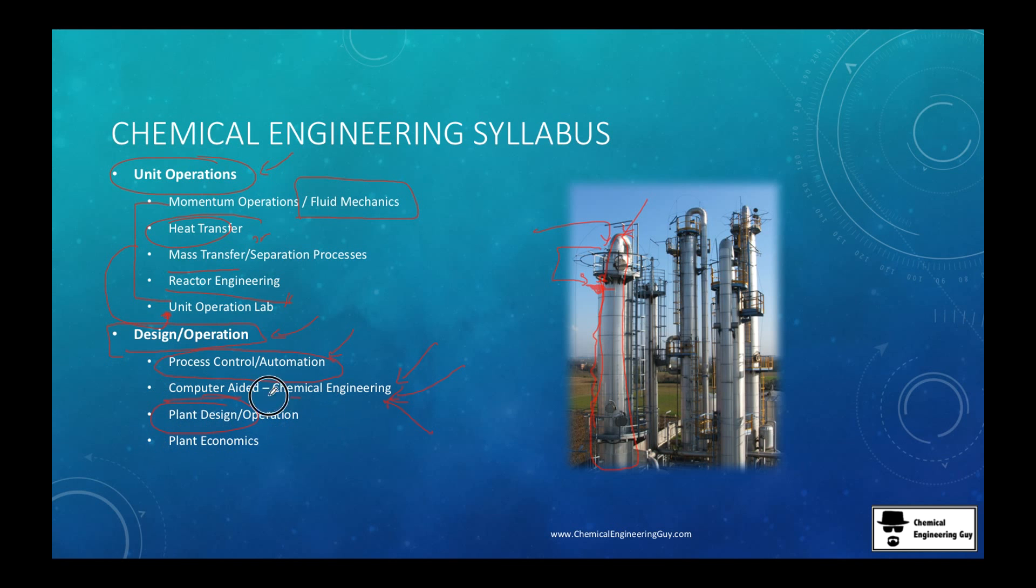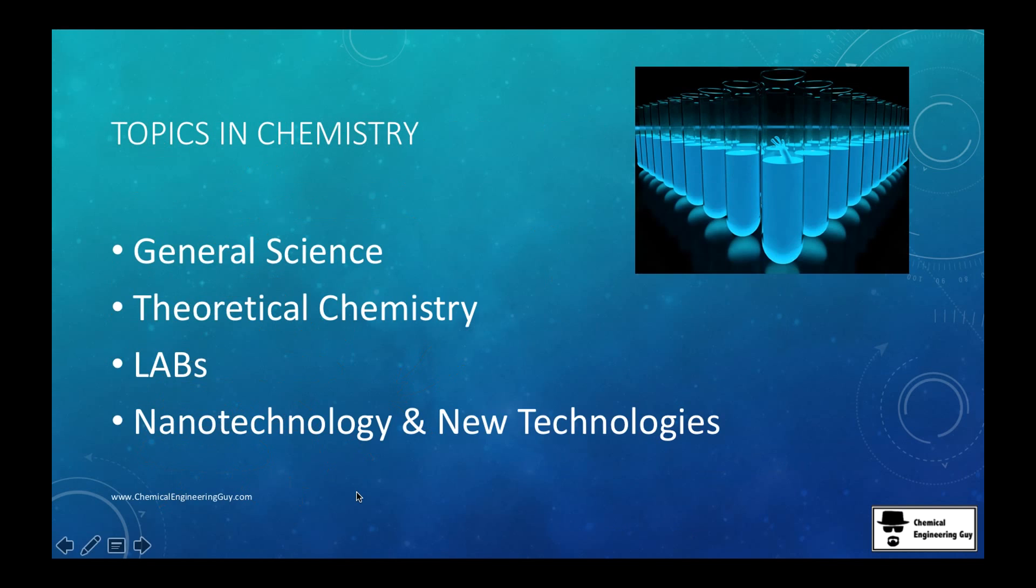Plant design and operation is one of the most important ones and probably you're going to have one final project involving the building or design of a chemical plant, and you need to include the plant economics which means how much money, how much investment, how much is going to cost to operate, and when is the return on investment.